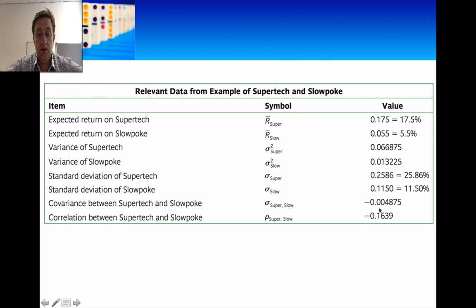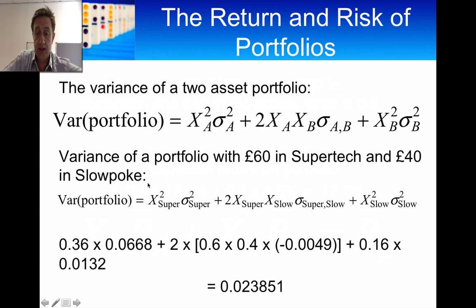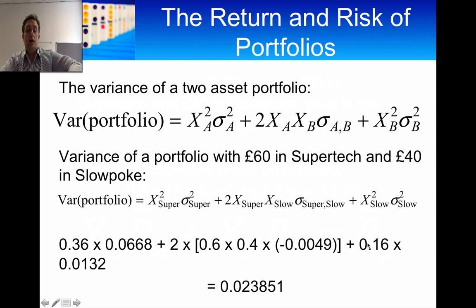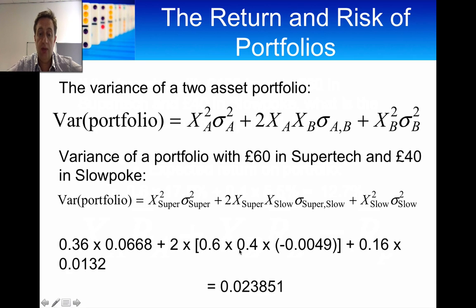The covariance figure is as shown here. So if we've invested 60% in Supertech and 40% in Slowpoke, then 0.6 squared is 0.36, multiplied by the variance of Supertech which is 0.066. We have 0.4 squared, which is 0.16, multiplied by the variance of Slowpoke. And then we add 2 times the weight of Supertech times the weight of Slowpoke times the covariance between Slowpoke and Supertech. That gives us a variance of the portfolio equal to 0.023851.